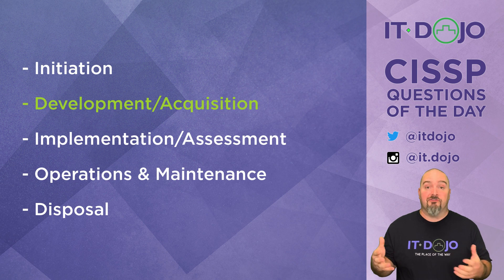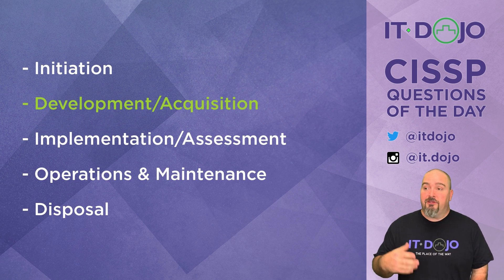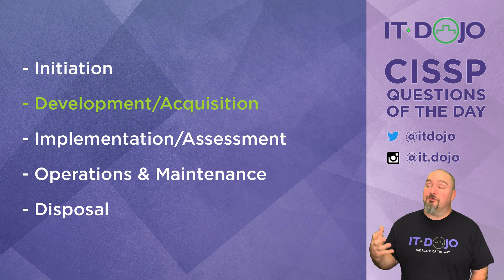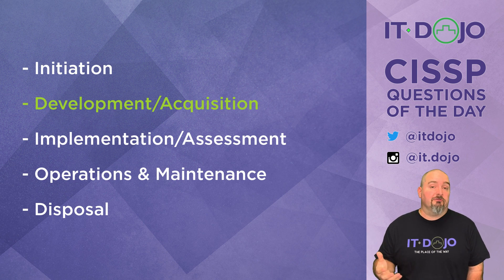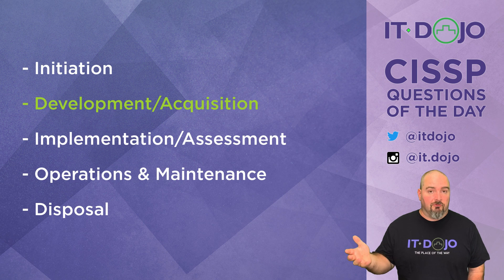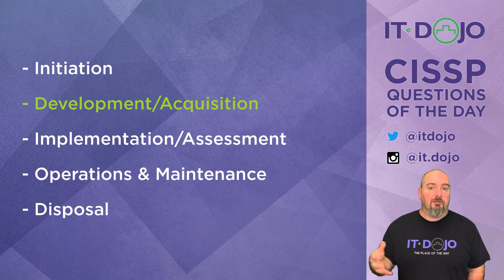Again, looking at privacy impact assessment — we did that in the initiation phase, but it has a life throughout the system development lifecycle. And then the last major thing that occurs during this phase is to make sure you do functionality testing and security testing. That has to be done before things go into production, and this is the place in the SDLC where that occurs.